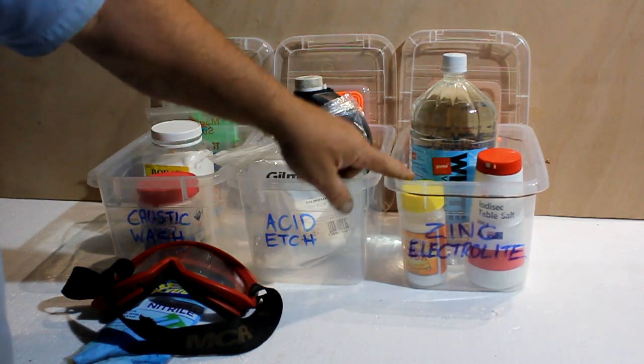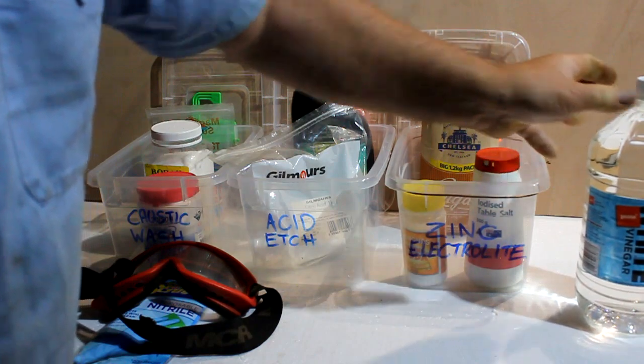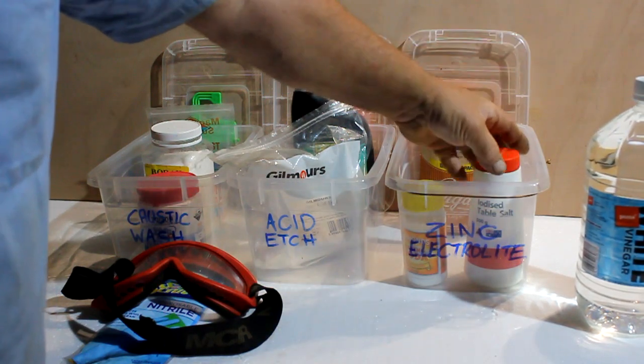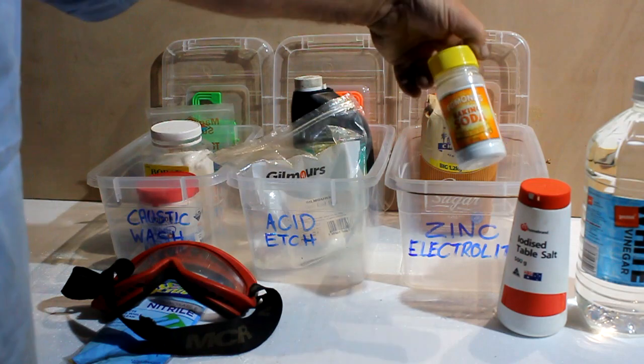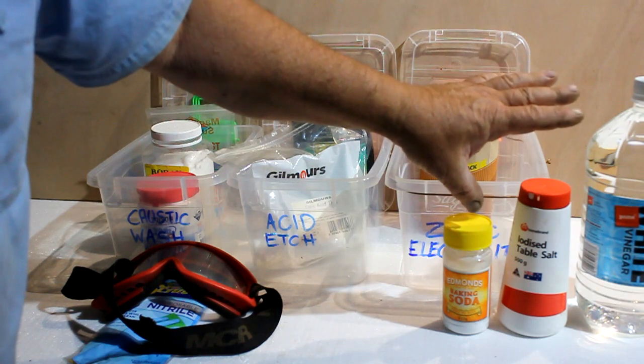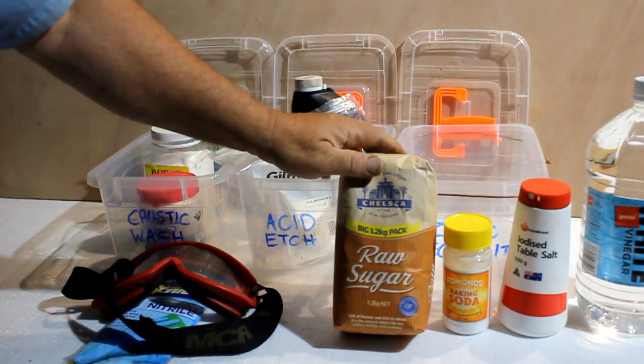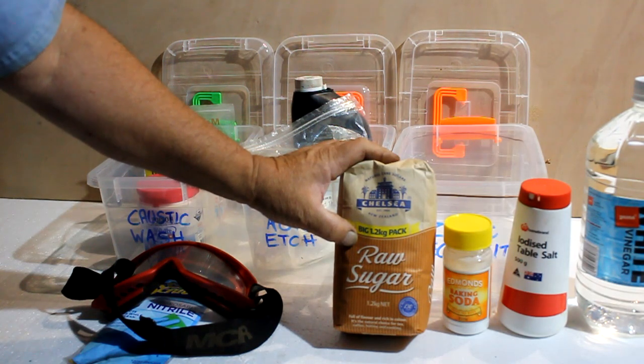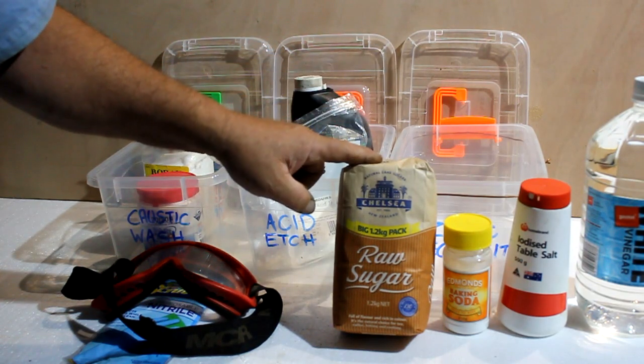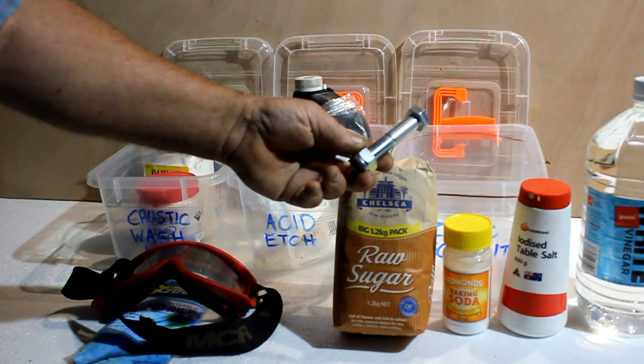For the zinc electrolyte we're going to use common old white vinegar, it's a very mild acid. To make it conduct electricity a little better we're going to use table salt or baking soda. Both work just as well but I'm just letting you know what can be used. We can also add quite a large amount of sugar. A cup full of sugar dissolved in warm water or warm vinegar can be poured in here and that takes place of the commercial brightener which will give us a nice bright finish on the bolts instead of the dull finish of pure zinc.